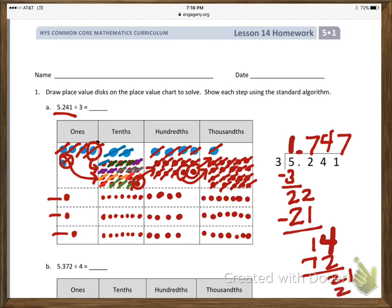So once I distributed them all, there were 21 distributed and none left over. So we are left with a quotient of 1 and 747 thousandths. Very fun.